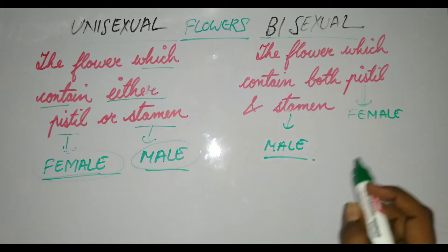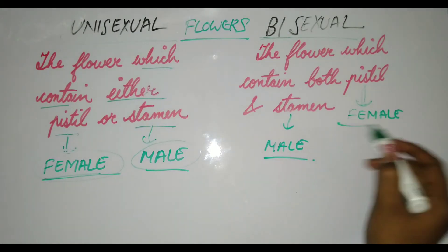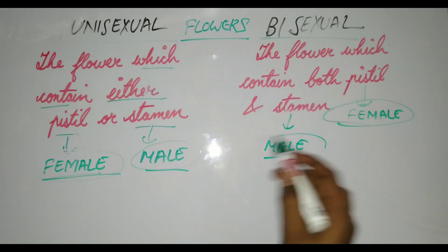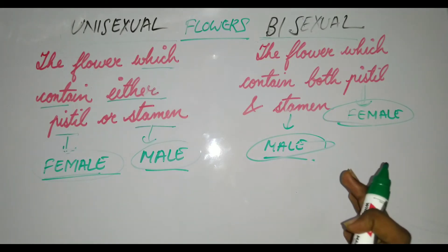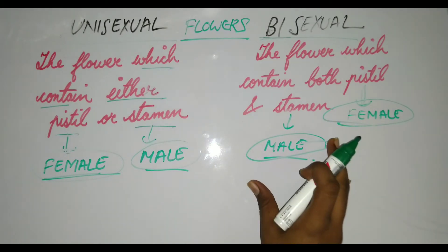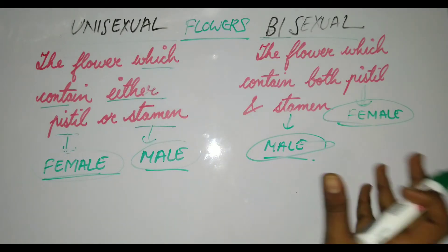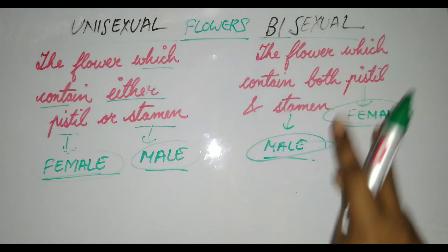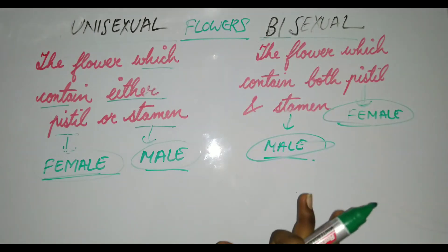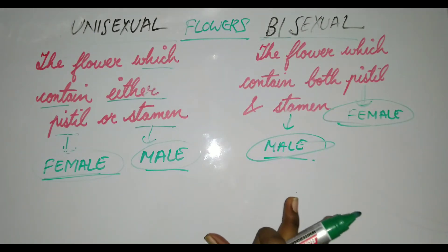So the flower which contains both female as well as male reproductive parts is called bisexual. 'Bi' means two — both of them together. This is the key point to remember.